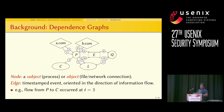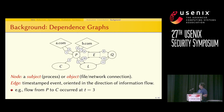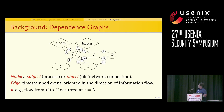Most forensic analysis treats the content of logs as a dependence graph. In this graph, nodes are subjects or objects — subjects being processes and objects being files and network connections. Edges between nodes represent dependencies, which are timestamped events oriented in the direction of information flow. For example, at time 3, information flows from node P to node C, so C has a dependence on P at time 3.